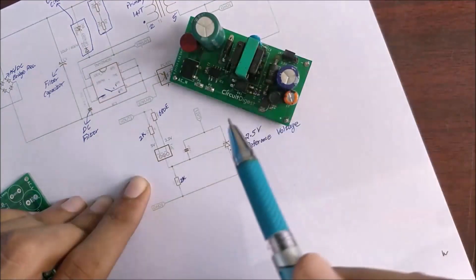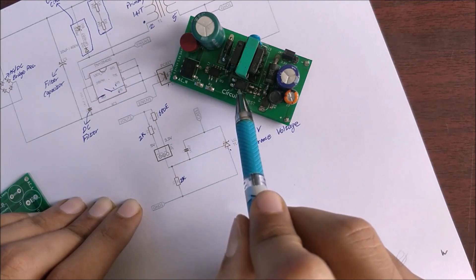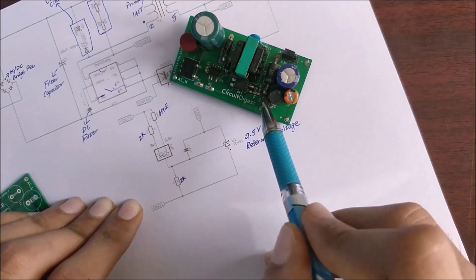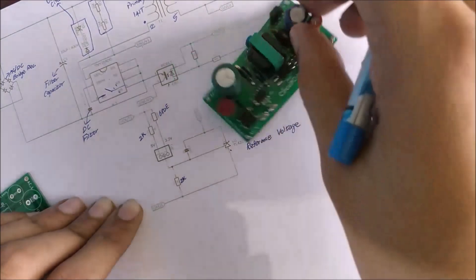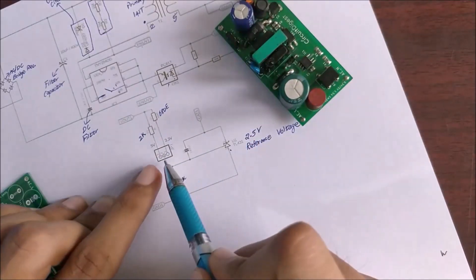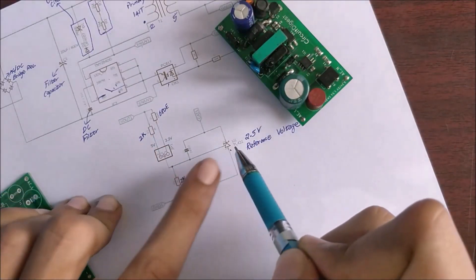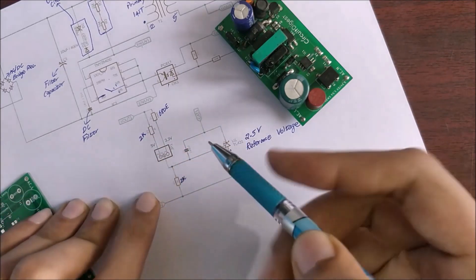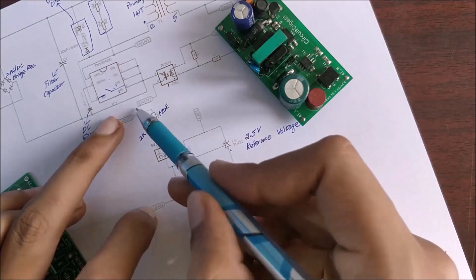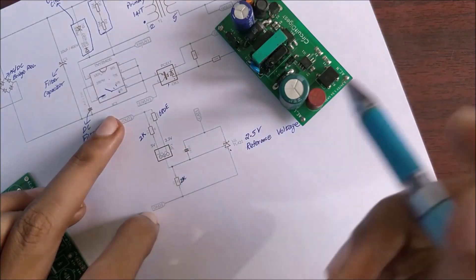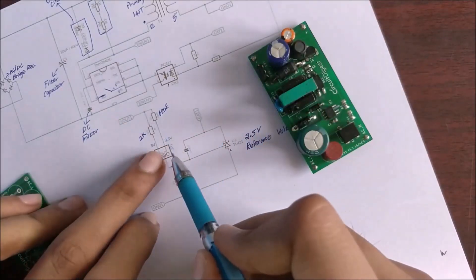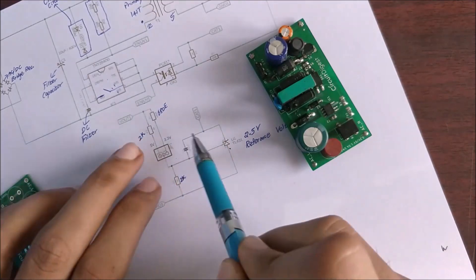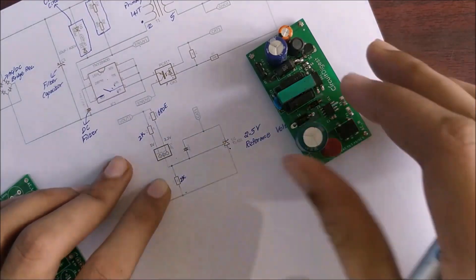Over here you can see our optocoupler IC which is the PC817 and the voltage reference TL431 which is in a transistor package. You can see two jumper wires which actually switches between connecting a 2k resistor to our TL431 or a 680 ohm resistor to our TL431. If the output voltage has to be set at 5 volts we have to place our jumper at this position and if the output voltage has to be set at 3.3 volts we will be moving our jumper to this position.